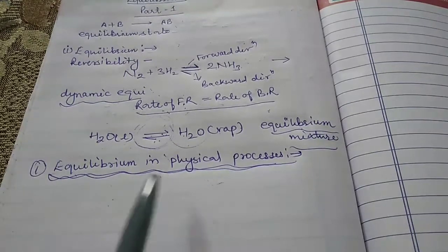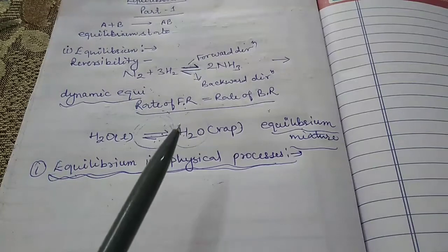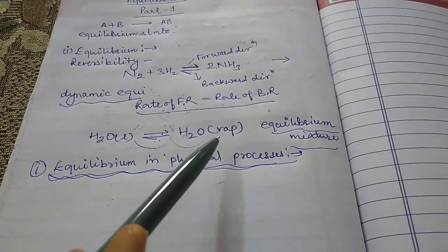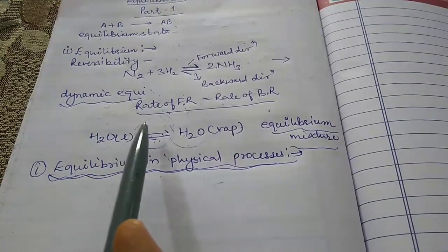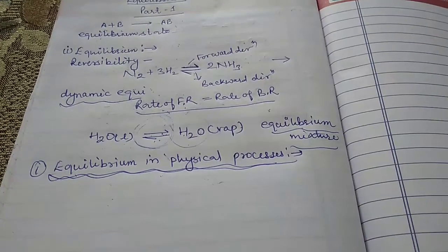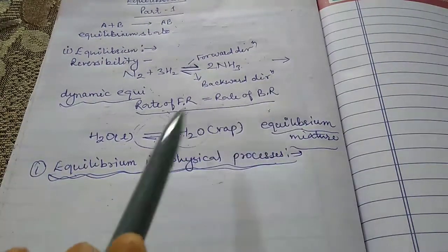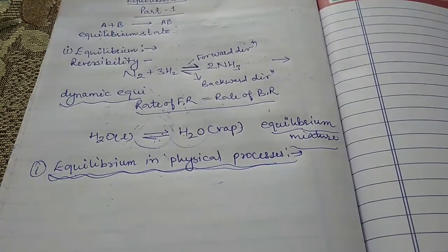There is another term: chemical process. Chemical processes are where chemical reactions take place. For example, the decomposition of calcium carbonate into calcium oxide and carbon dioxide is a chemical process. Similarly, the reaction between hydrogen and iodine is a chemical process.